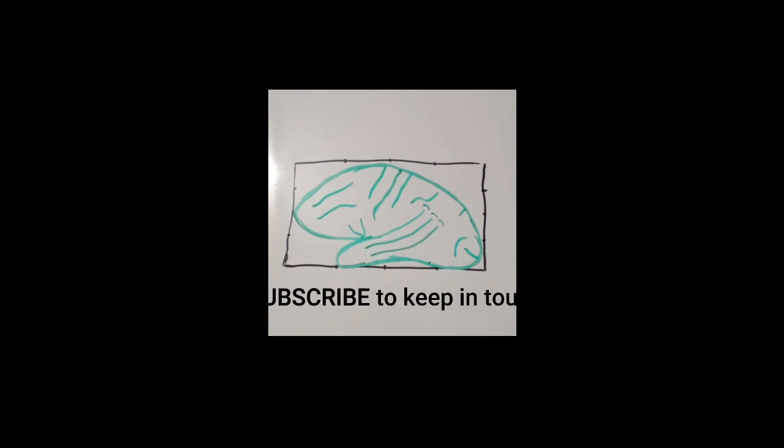So this is the superolateral surface of the cerebral hemisphere. I think it will be easy for you now, and you can draw the sulci and gyri anatomically, correctly, and in a short period of time. Thank you very much for watching.